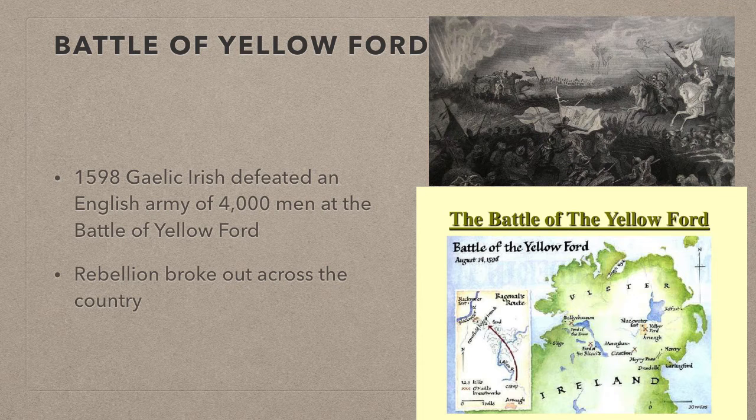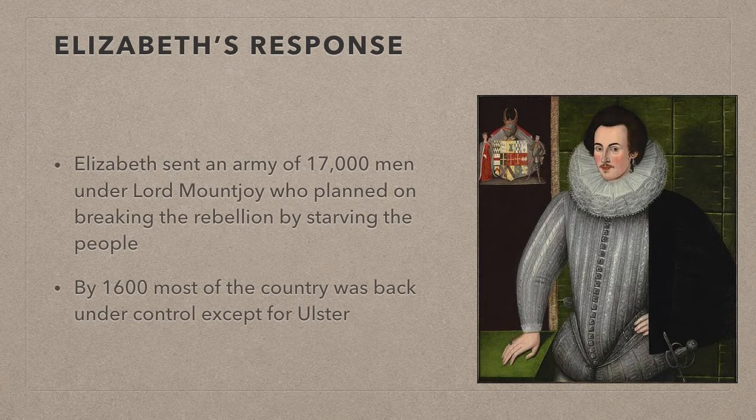In 1598 the Gaelic clans defeated the largest army brought to Ulster in a long time — a force of up to 4,000 men — at the famous Battle of Yellow Ford. After this victory, rebellion broke out throughout the country and the Munster plantation completely collapsed; even the Pale itself was under threat. Elizabeth poured nearly all of her money into crushing the Irish rising and equipped an army of 17,000 men. The man eventually chosen to defeat the Irish was the brutal Lord Mountjoy, who planned to break the rebellion by starving the people.